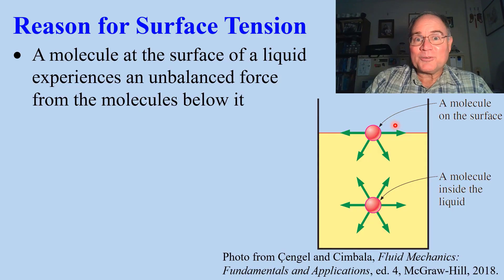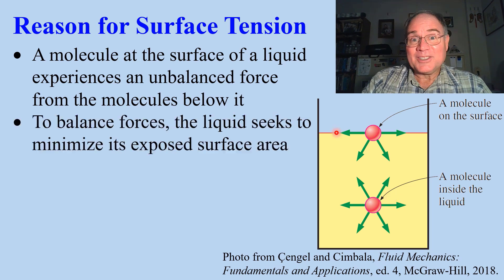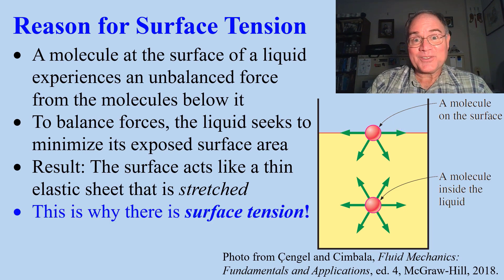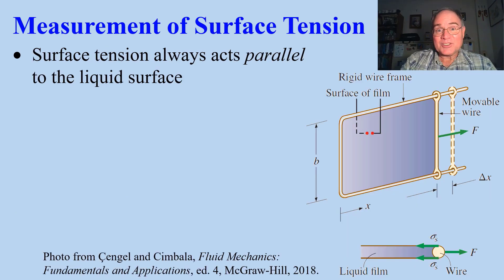Why is there surface tension? A molecule right at the surface of a liquid experiences an unbalanced force from the molecules below it. To balance these forces, the liquid minimizes its surface area. The surface then acts like a thin elastic sheet that's stretched — this is why there's surface tension. Surface tension always acts parallel to the liquid surface.